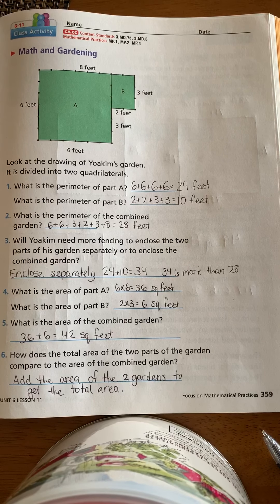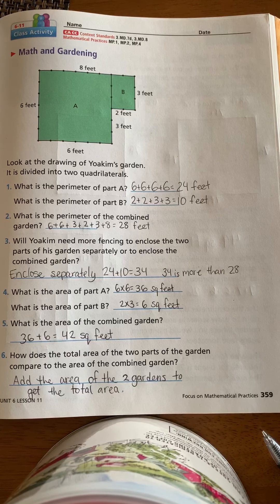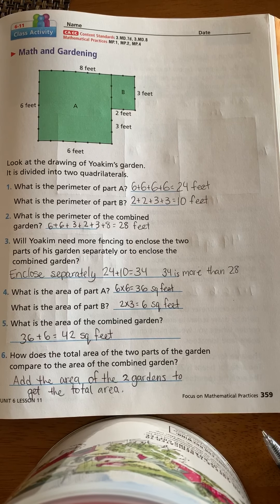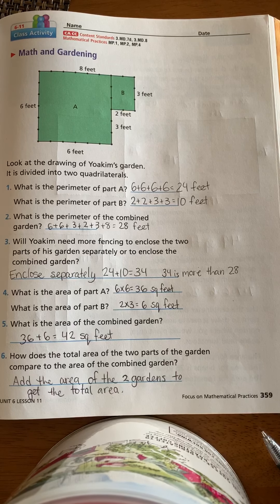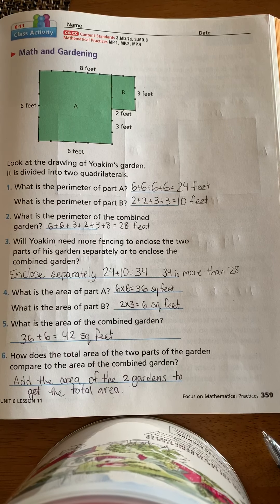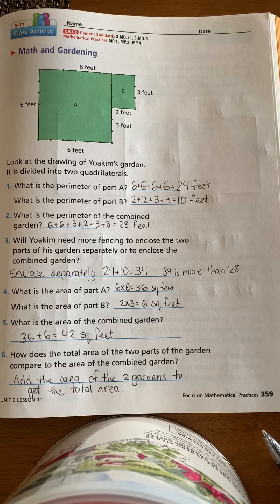What is the area of part B? 2 times 3 is 6 square feet. What is the area of the combined garden? So you just add those together. 36 plus 6 is 42 square feet combined.